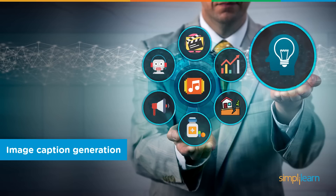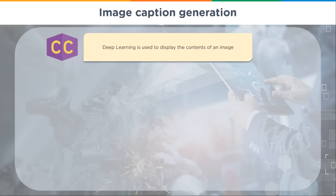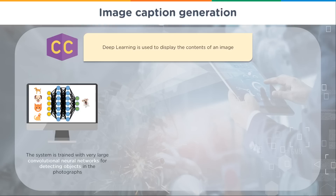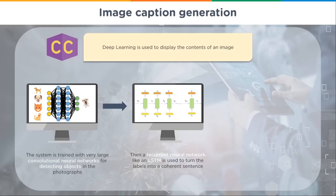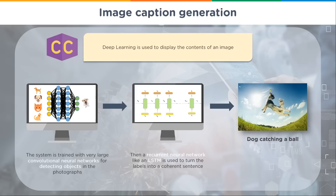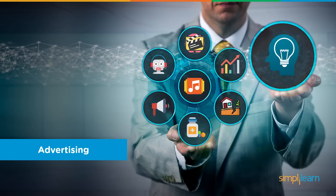Image caption generation: deep learning is used to describe the contents of an image. The system is trained with large convolutional neural networks to detect objects in photographs, then a recurrent neural network like an LSTM turns the labels into coherent sentences — for example, 'dog catching a ball.' This powers features like Google Photos, where you can search for all pictures of your dog or find pictures where your dog is catching a ball.